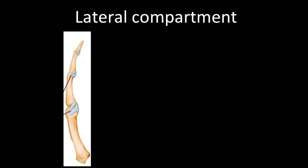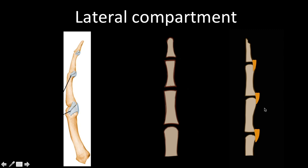Now the lateral compartment. Laterally there are only two structures: the radial and ulnar collateral ligaments. On the sagittal image, they arise dorsally from the proximal bone and distally attach more on the volar aspect. Technically there are proper and accessory components on both sides, but clinically this distinction is not important — you simply need to know there are radial and ulnar collateral ligaments at each joint.